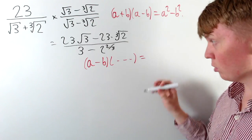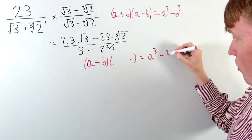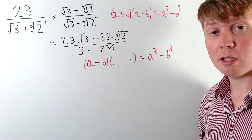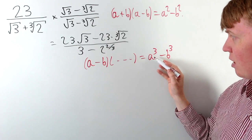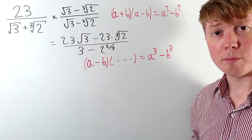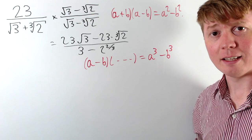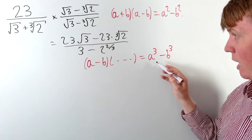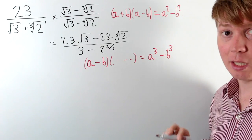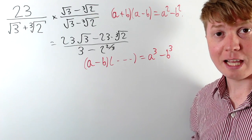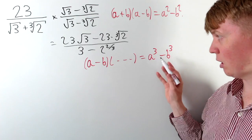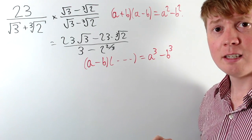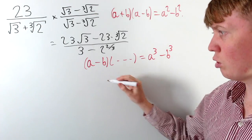A sensible guess would be a cubed minus b cubed. This isn't just a random guess — if you think about a cubed minus b cubed as a polynomial in the variable a, then by the factor theorem, because this equals 0 when a equals b, the factor theorem tells you that a minus b has to be a factor of this polynomial, so you know there will be something you can multiply by to get a cubed minus b cubed.